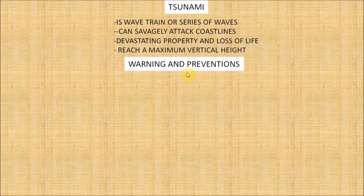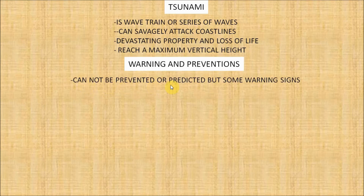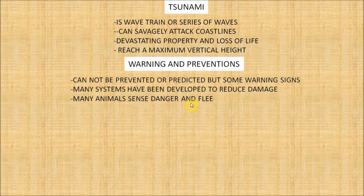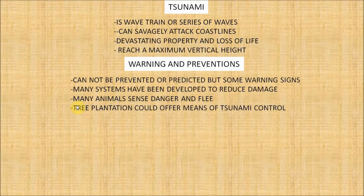Now let's see warnings and preventions of tsunami. Tsunami cannot be prevented or predicted, but some warning signs and warning systems have been developed to reduce damage from tsunami. Many animals sense danger and flee to higher ground before a tsunami. Tree plantation could offer a means of tsunami control.